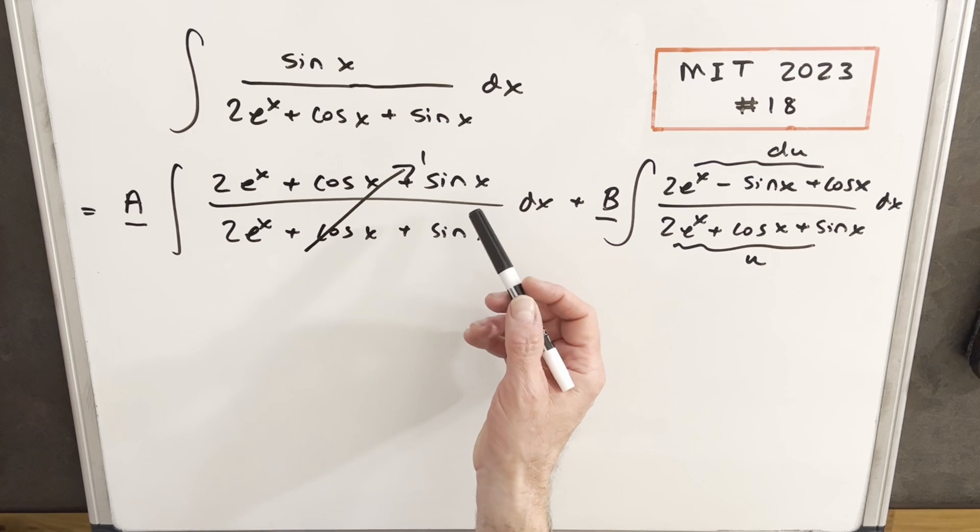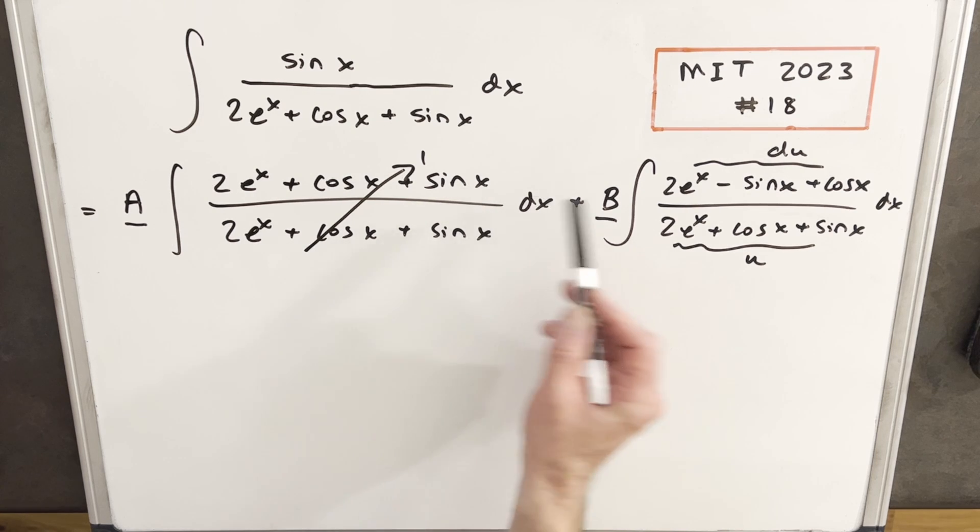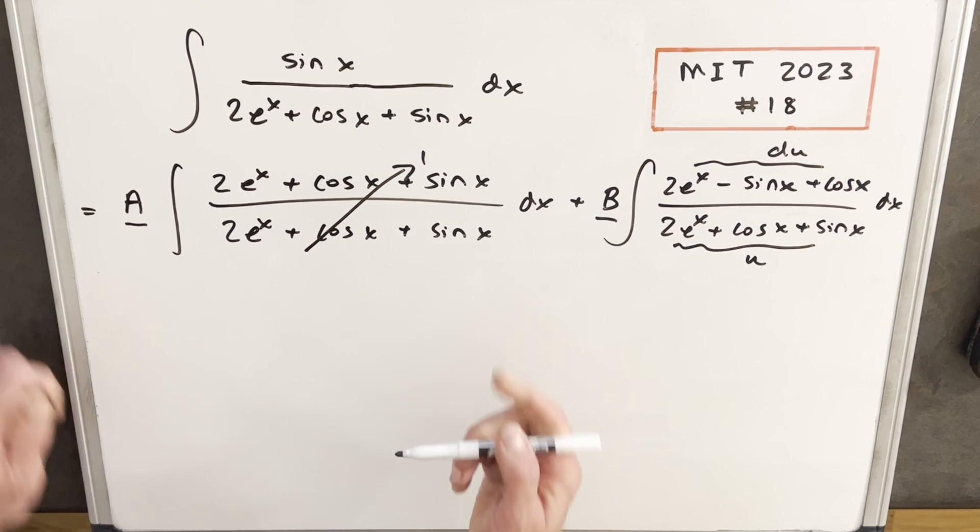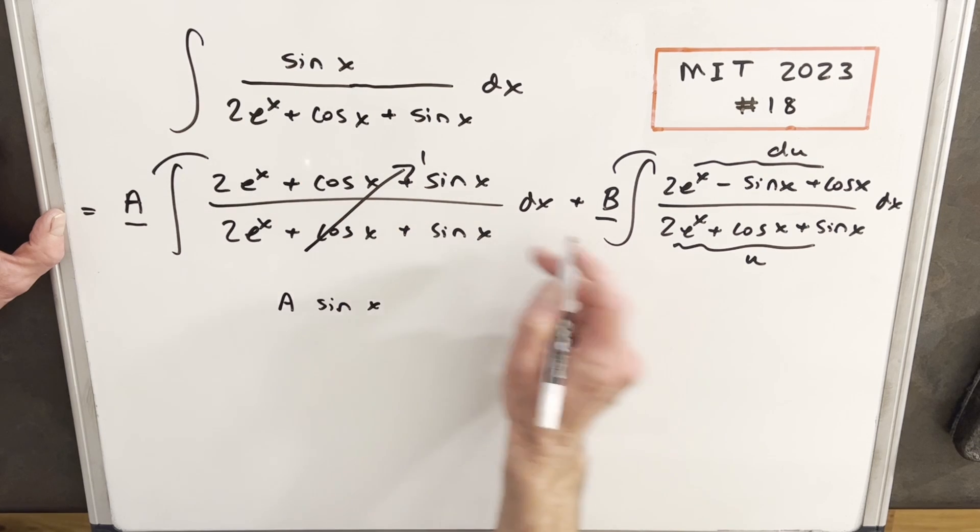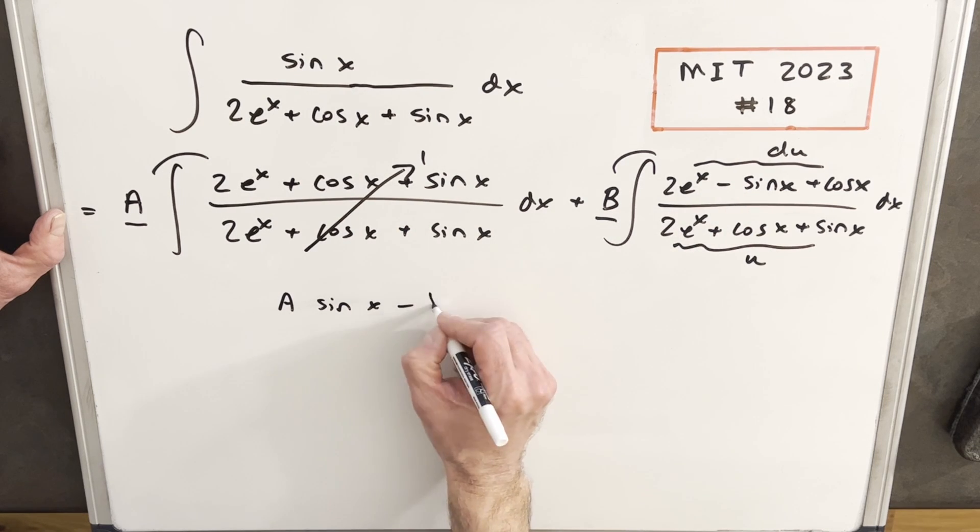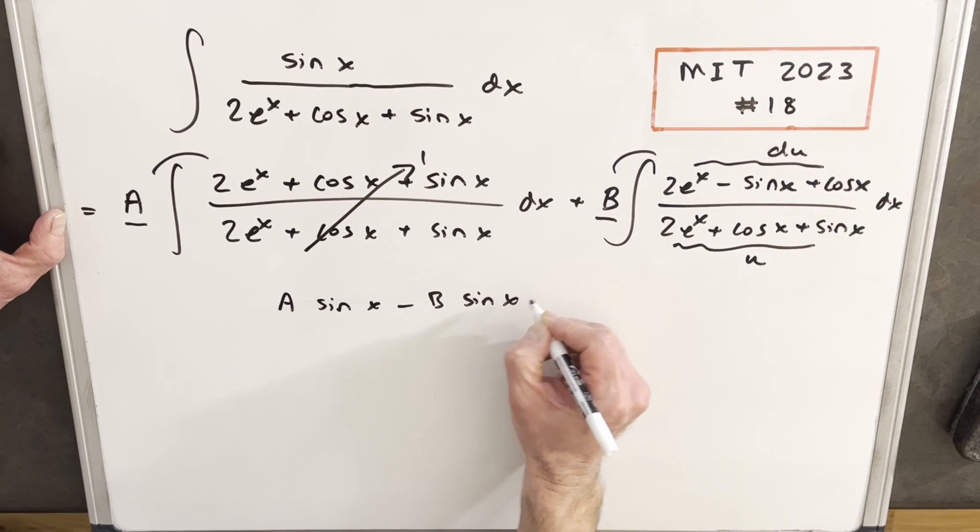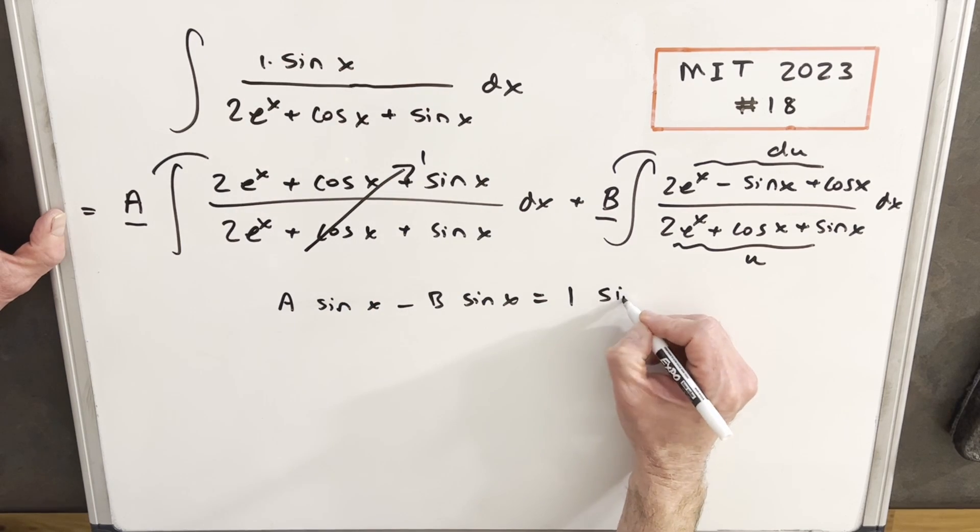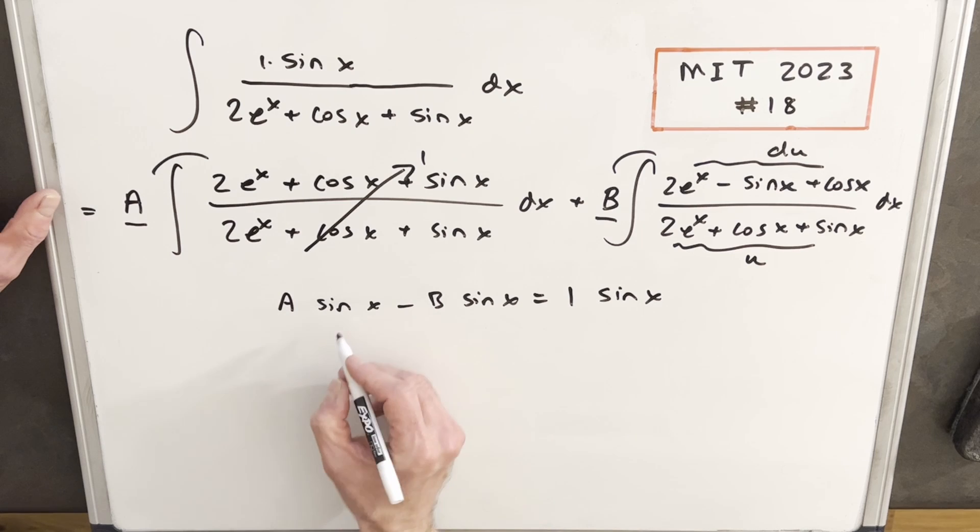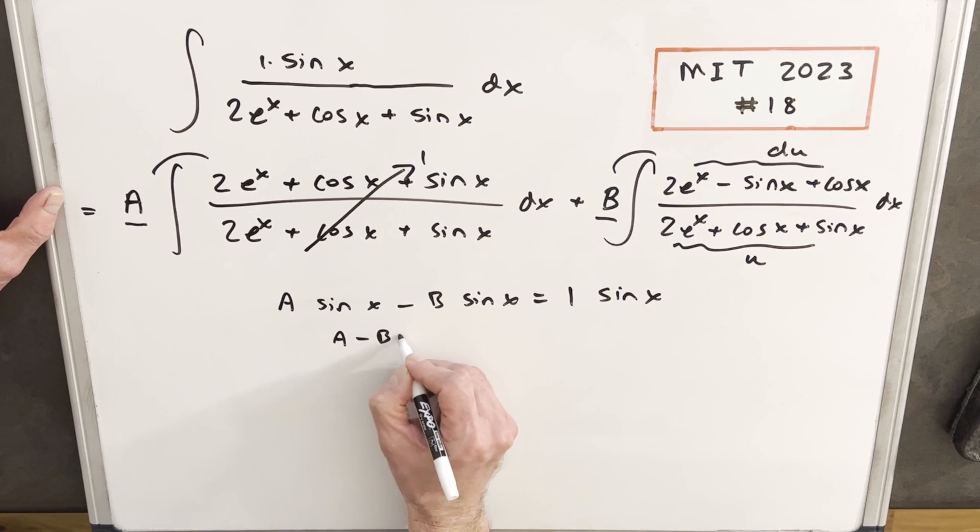So to start, we can break this up. I think I want to focus on the sine term, because it's nice how we have this minus here. So we're going to need a sine x from this one minus b sine x equal to 1 sine x, because we have a 1 right here. Okay, so that just means that a minus b equals 1.